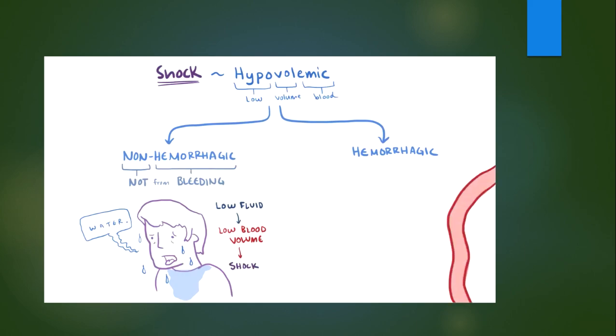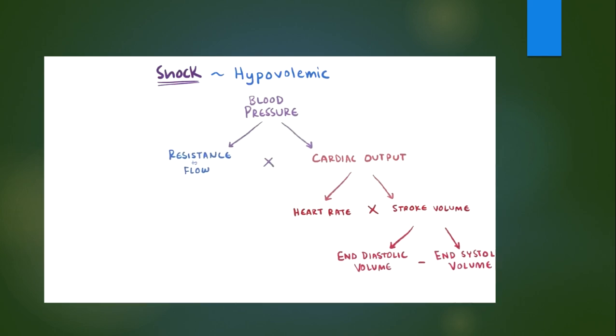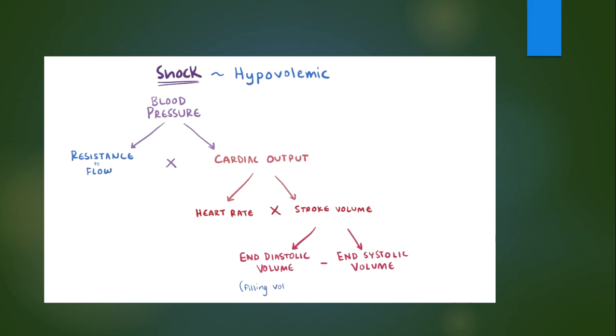Hemorrhagic hypovolemic shock is loss of blood volume through ruptured blood vessels, in other words from bleeding. A loss of about 20% of your total blood volume, roughly one liter, can be enough to induce hypovolemic shock. When that liter of blood leaves the circulation, the total volume filling into the heart goes down, meaning the end-diastolic volume goes down. This means stroke volume goes down as well, which causes cardiac output to go down and finally blood pressure goes down.